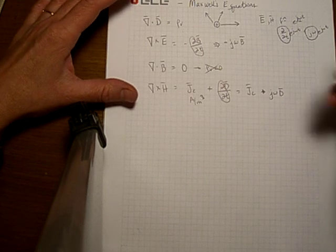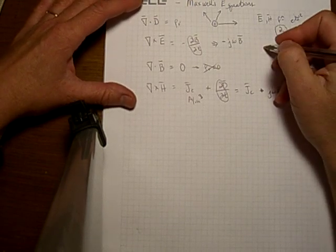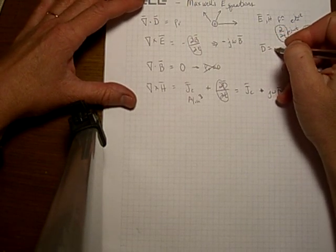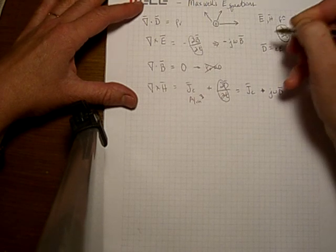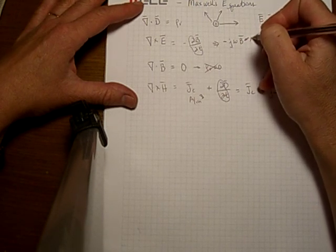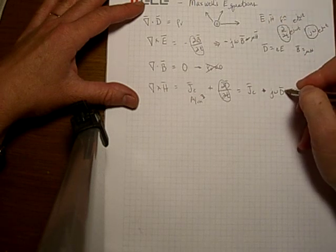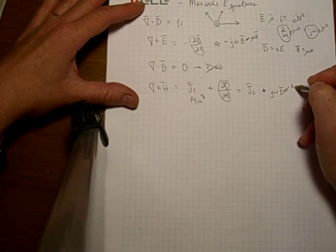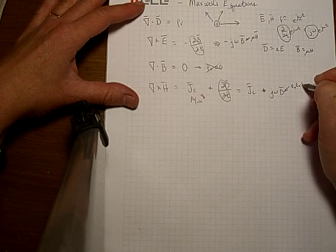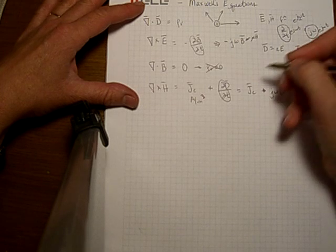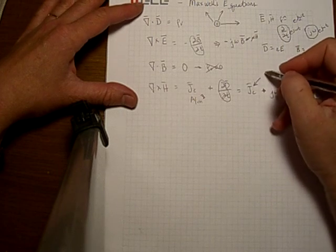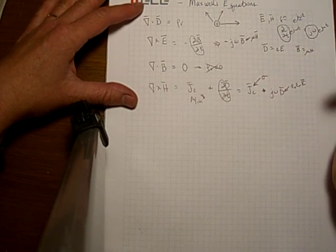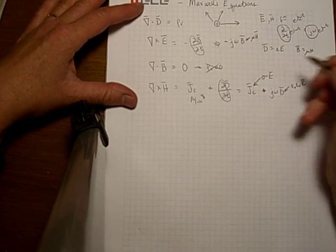There are a few other substitutions that I'd like to make. The first one is that D is equal to epsilon E and B is equal to mu H. So right here we can put mu H, and right here we can put epsilon, which is epsilon naught times epsilon R times the electric field. The other replacement we'd like to make is for conduction current density, and that is conductivity times the electric field.